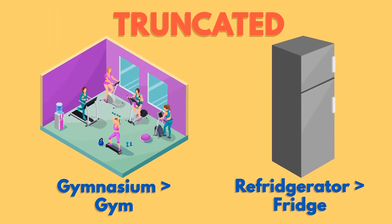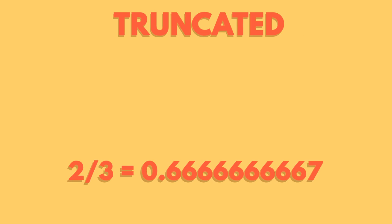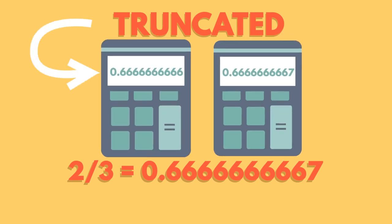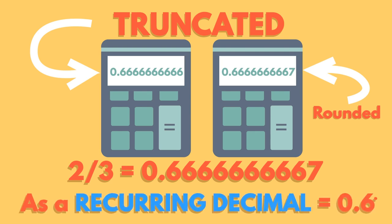Have you heard of the term truncated? It means to cut off. A decimal can be truncated by cutting off all digits past a certain point. Your calculator will often give you a truncated value, rather than a rounded value. If you enter 2 divided by 3, the display might show this, or this. The first is truncated, the second is rounded to 10 decimal places. The fraction 2 thirds can be expressed like this, which is a reoccurring decimal.